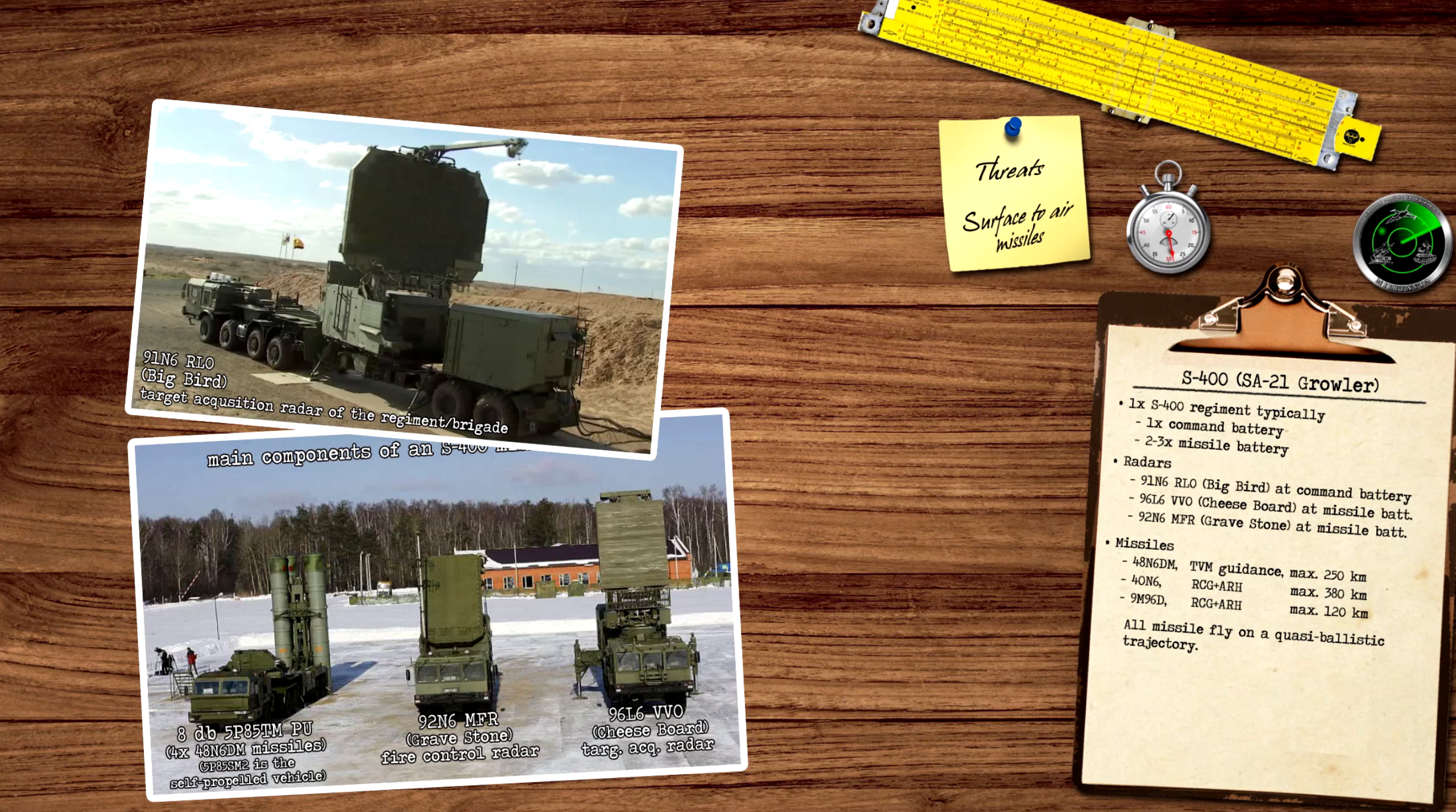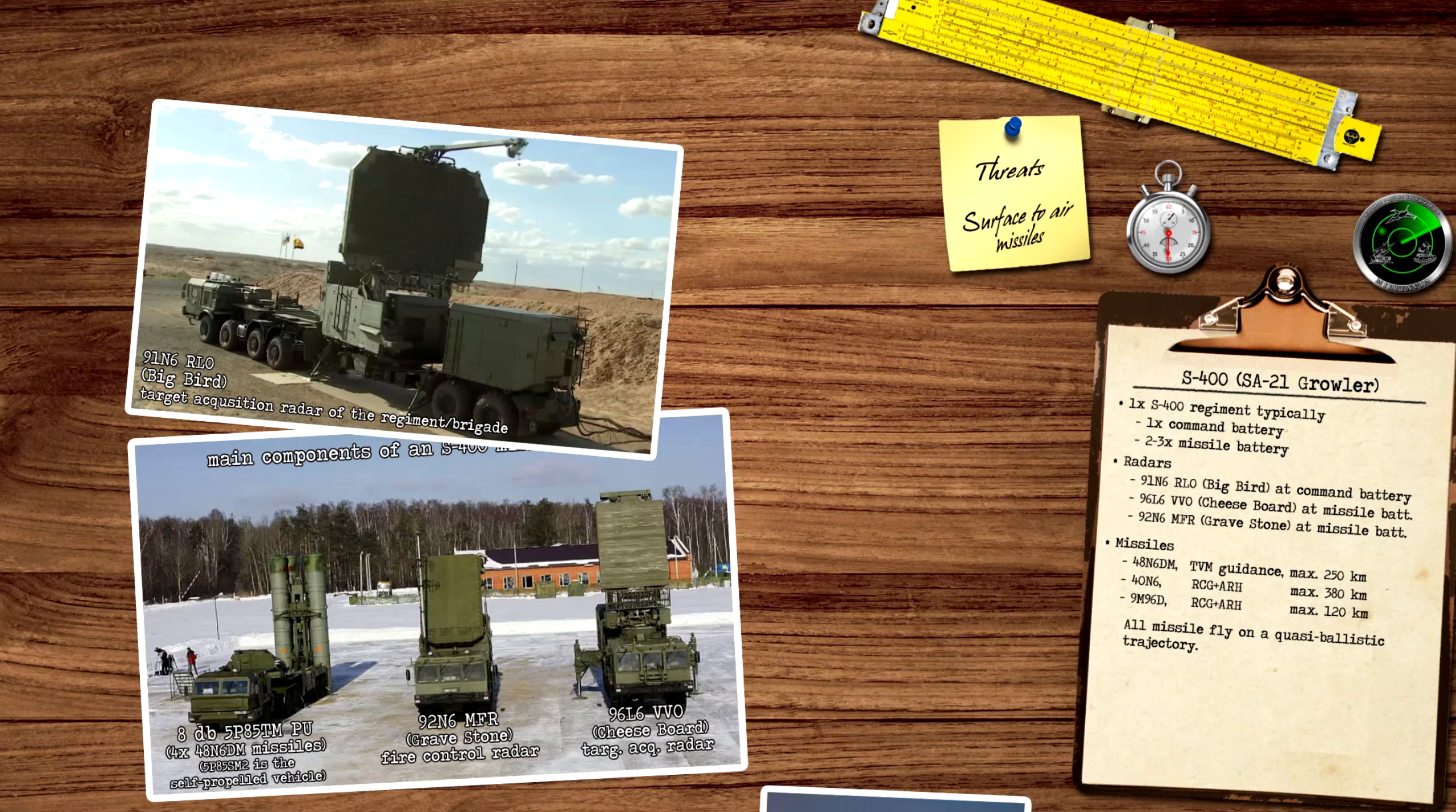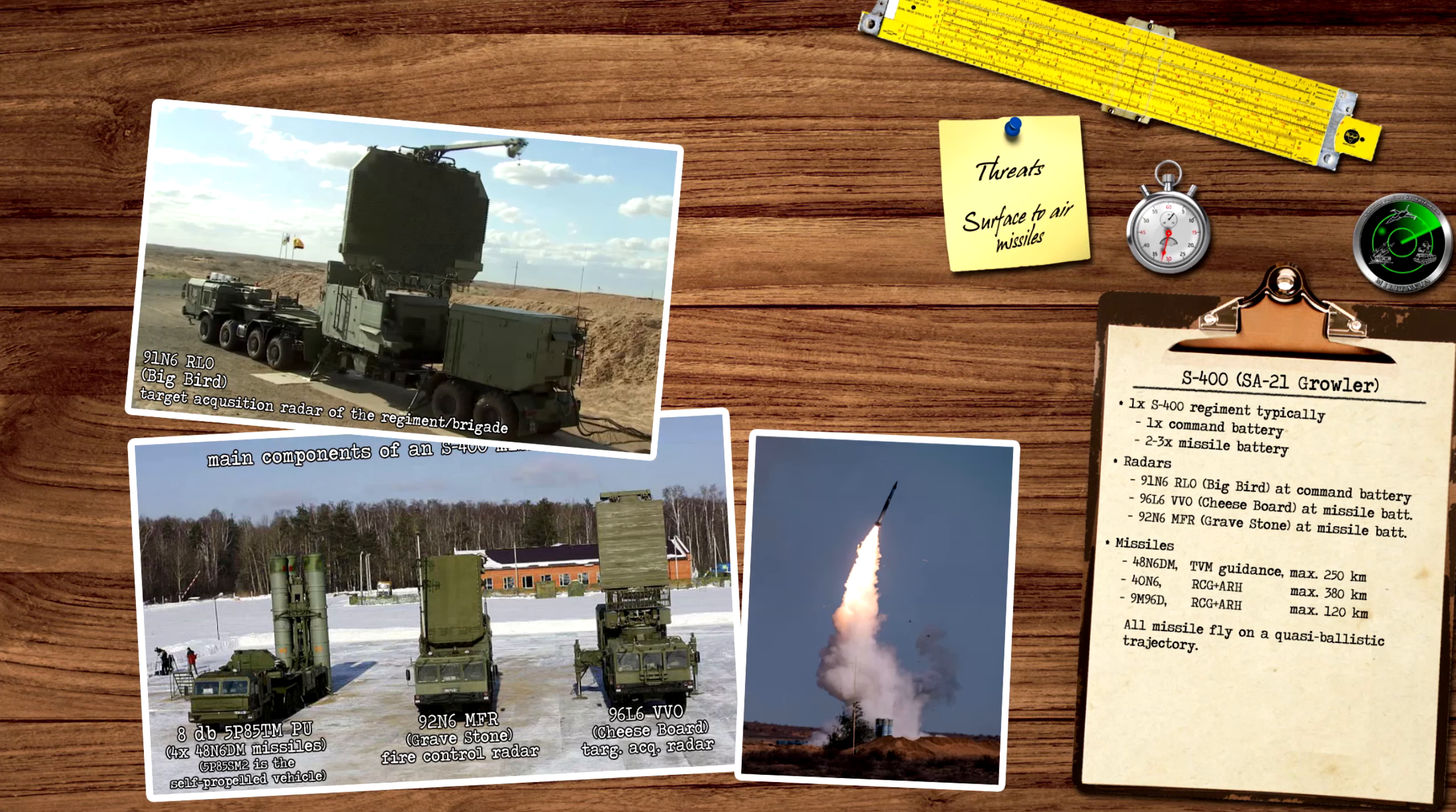The 48N6DM missile uses the track-via-missile guidance. The position of a target is measured by both the radar and the seeker head of the missile, which are transmitted back to the radar. Following the launch, the missiles fly to the calculated interception point on a quasi-ballistic trajectory with minor but continuous trajectory corrections according to the current speed and heading of the target.